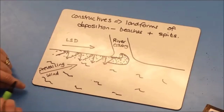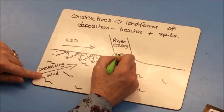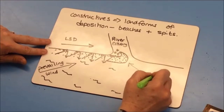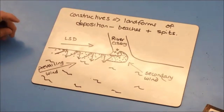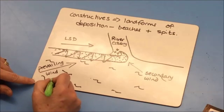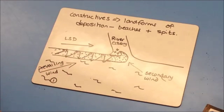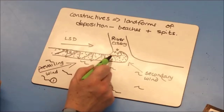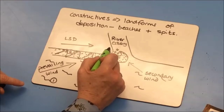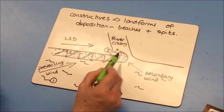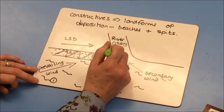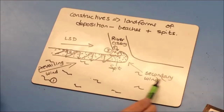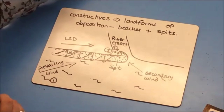Notice the spit has a hooked shape. In the sheltered area behind the spit, a salt marsh will form because the water doesn't move around very much. Many spits have this hooked end due to a secondary wind that flicks the end around. To summarise: waves approach at an angle in the direction of the prevailing wind; material moves in a zigzag known as longshore drift; at a bend, material is deposited as a spit; a salt marsh forms behind it; and many spits have a hooked end caused by a secondary wind.